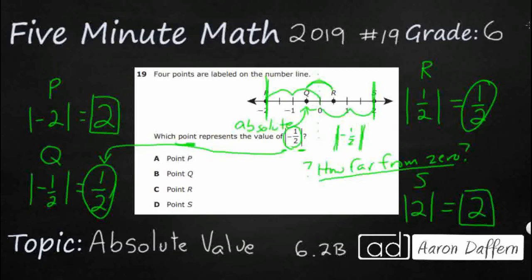The negative one-half absolute value is actually positive one-half. Which point represents this positive one-half? That's the trick. Positive one-half is right here at point R.